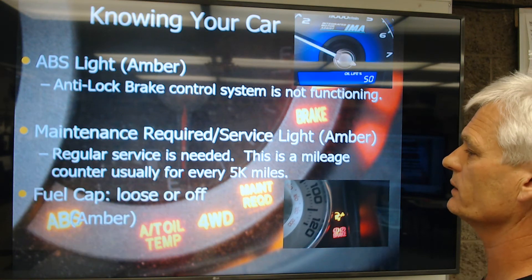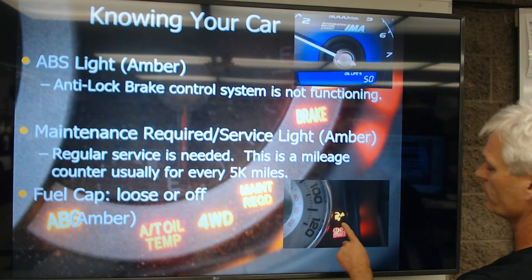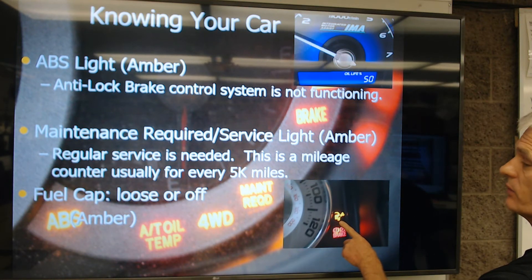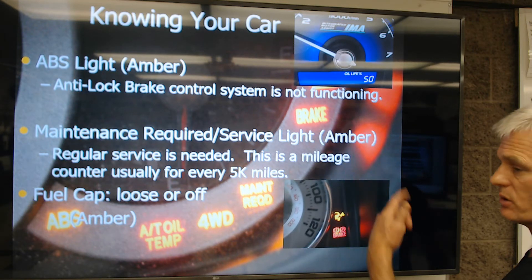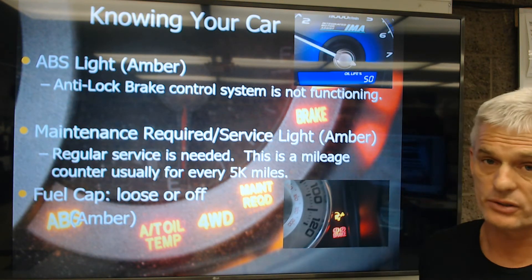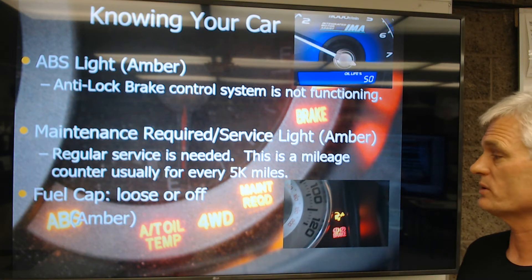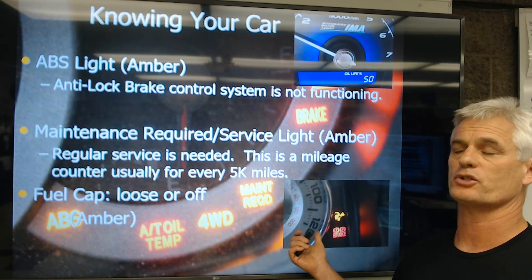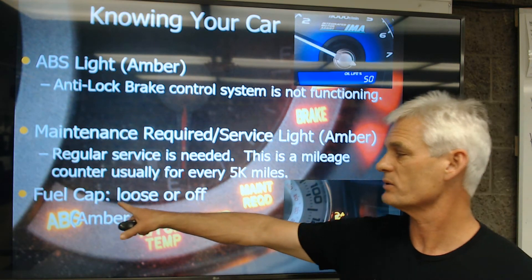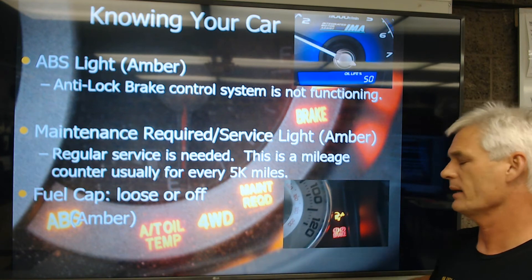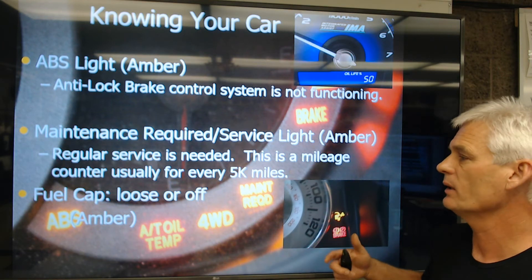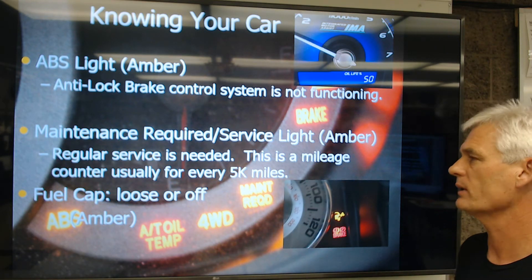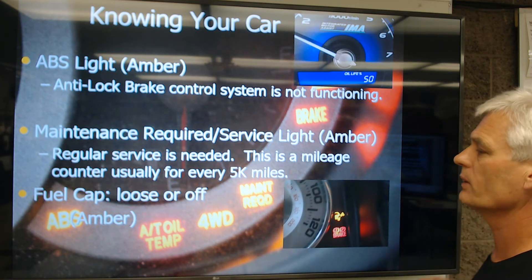Next is the fuel cap loose or off light, which is an amber light. This is going to tell you that you got gas and left the fuel cap off or loose, because if you don't tighten this after a couple of restarts, your check engine light will come on. You'll think you've got an emissions failure, take it to a technician, they'll plug in a scan tool and tell you that you left your fuel cap off. Some car manufacturers have this light. Ford has gotten around this by having a spring-loaded trap door so there's no cap to lose.